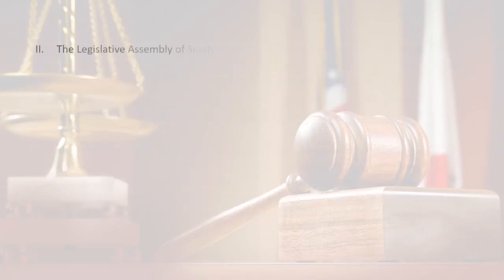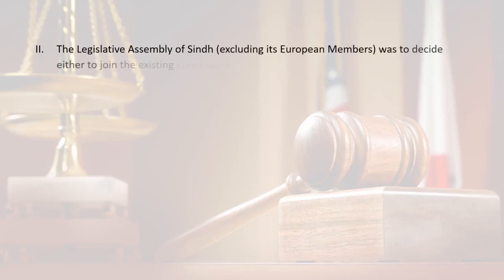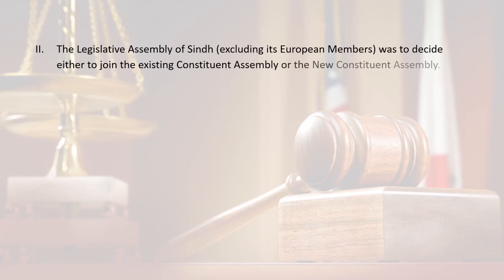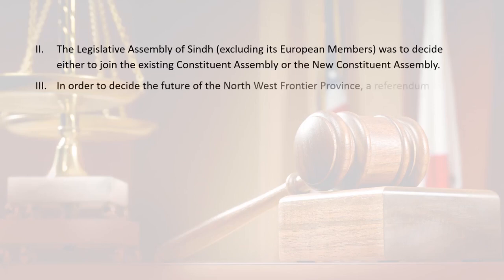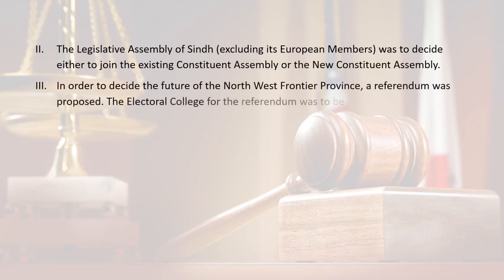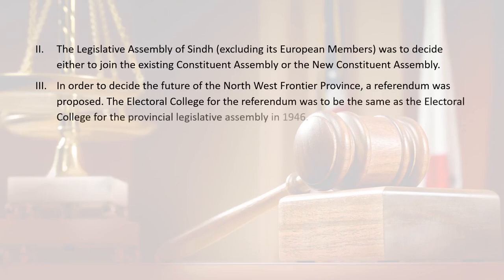Number two: the legislative assembly of Sindh, excluding its European members, was to decide either to join the existing Constituent Assembly or the new Constituent Assembly. Number three: in order to decide the future of the Northwest Frontier Province, a referendum was proposed. The electoral college for the referendum was to be the same as the electoral college for the provincial legislative assembly in 1946.